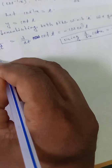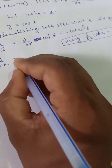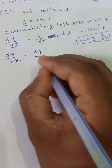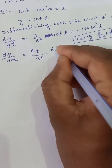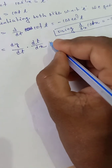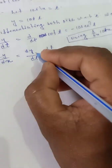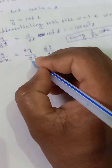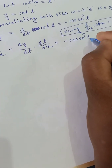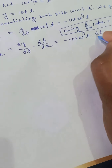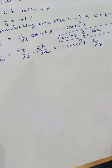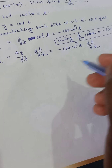So now dy by dx is equal to dy by dt into dt by dx, which equals minus cosec squared t into dt by dx.